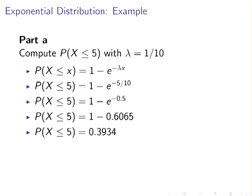Here is a cleaner version of that calculation. There is a slight rounding consideration: e to the minus 0.5 is 0.6065 to more decimal places, which rounds to 0.6066 at four decimal places. Either way, the answer comes out to 0.3934.